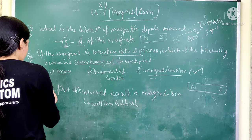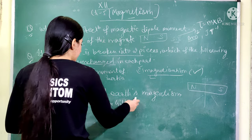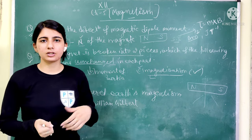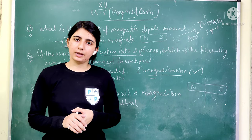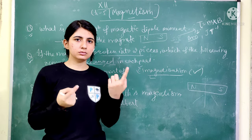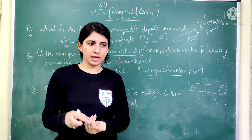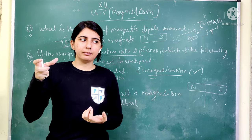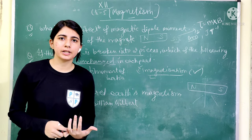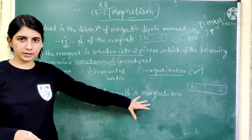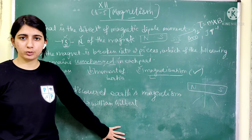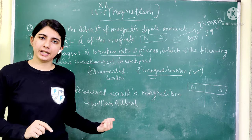The next question is: who first discovered Earth's Magnetism? The answer is William Gilbert. Our chapter on Magnetism is not just about magnets but also about the properties of magnetic materials — how many materials can be magnetized, or which cannot. William Gilbert first discovered Earth's Magnetism and told us about it. You can note this as a key point from the British scientist.